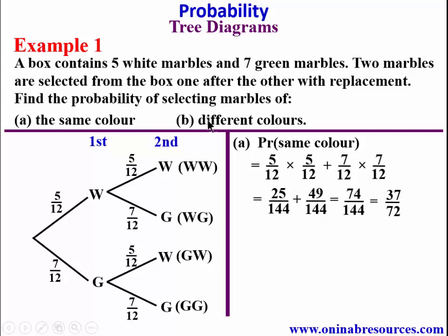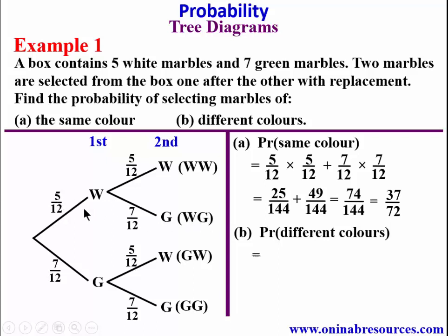We are done with Part A. For Part B, we find the probability of selecting marbles of different colors. It is either white first and green second, or green first and white second. The probability of white first and green second is 5/12 times 7/12, plus green first and white second which is 7/12 times 5/12.